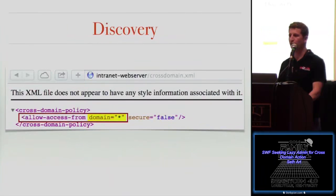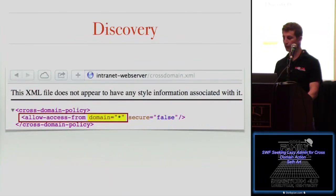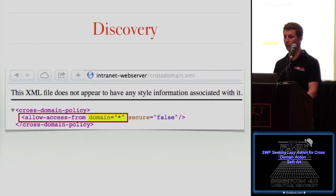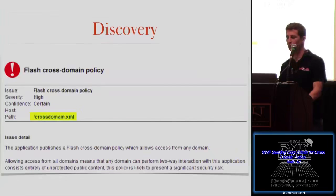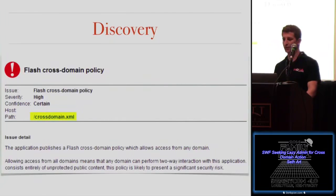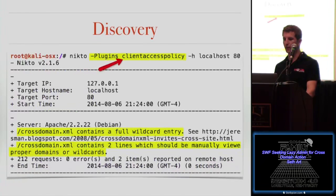A few ways to discover this vulnerability: first, just type cross-domain.xml at the end of any FQDN you're browsing or testing, and look for whether the allow-access-from directive specifies domain equals star. If you use Burp Suite Pro in active scanner mode, it will request cross-domain.xml and tell you if it has a star there. Nikto also has a specific plug-in called Client Access Policy that will look for cross-domain.xml and tell you if it contains a wildcard.